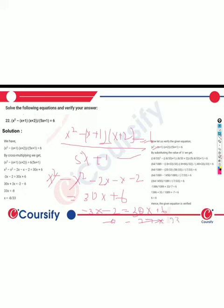So 33x gives us x equals minus 8 upon 33. The value of x is minus 8 upon 33. Checking: the output gives minus 6 equals 6, so yeah — 9 points of 3 minus 6 minus 1 minus 2 equals 22.